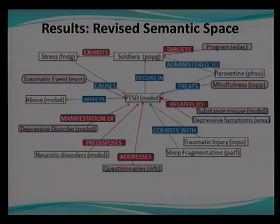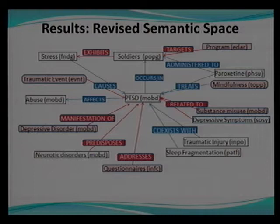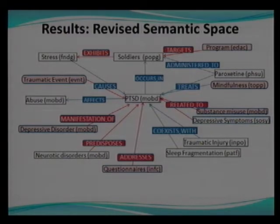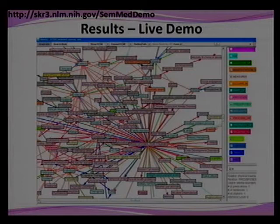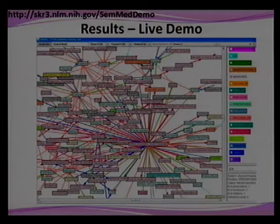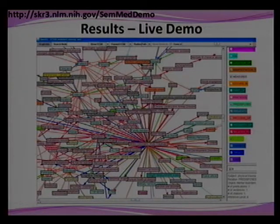What I'm showing here is that I've enhanced the semantic space — the red boxes are new relations I've added, and the pink boxes are new concepts. These iterations of adding concepts create a much richer understanding of the post-traumatic stress disorder domain. Unfortunately we don't have time for a live demo, but the website is available if you want to explore it. It's an interactive graph where you can move nodes around; clicking on the arrows shows the relations, and you can right-click to get the citation where that predication was found.